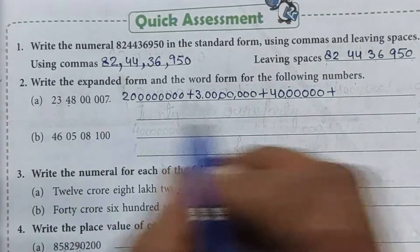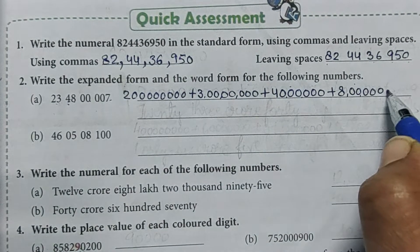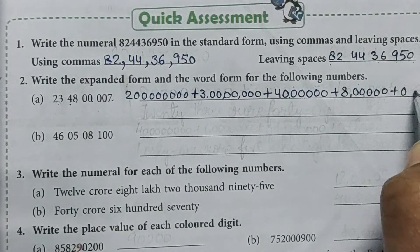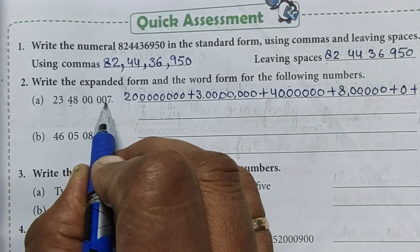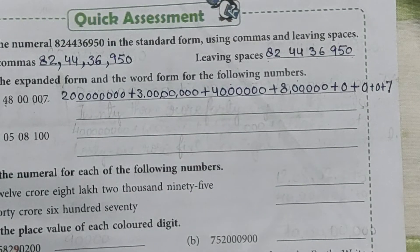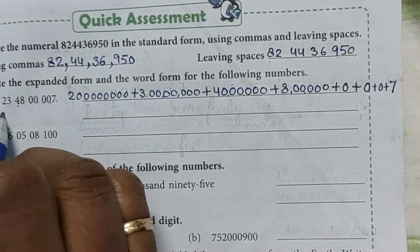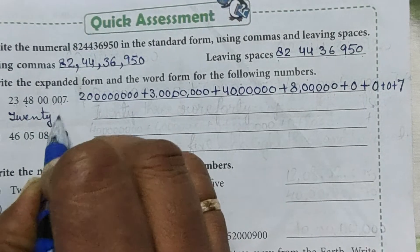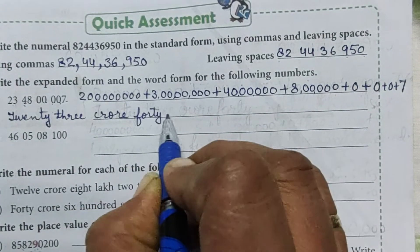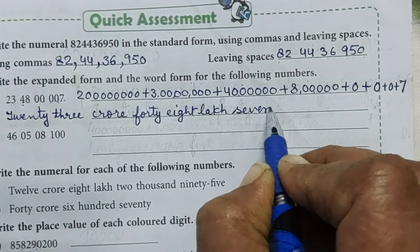Then 8 lakh. At the thousandth place there is no numeral, only zeros, so we put 0. At the hundredth place and tens place it is also 0. So we put 0 plus 0 plus 7. Now we write it in word form: 23 crore, 48 lakh, and 7.